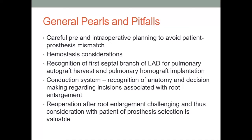A thorough survey of all suture lines, especially those located in difficult-to-reach and visualize posterior locations and around the coronary buttons, should be completed prior to administration of protamine and other blood products. The first septal branch of the left anterior descending artery should be meticulously preserved during any proposed pulmonary autograft harvest and subsequent pulmonary homograft implantation, as injury to this vessel can result in significant and at times irreversible left ventricular dysfunction. A careful understanding of the conduction system anatomy is also critical for any root incision made with the described enlargement techniques. Particular attention should be paid to the area underneath the commissure separating the right and non-coronary leaflets, extending leftward under the right coronary ostium. Attempts to place a rigid valve prosthesis tightly into the small aortic annulus can produce excessive pressure on the conduction system resulting in dysfunction or block.